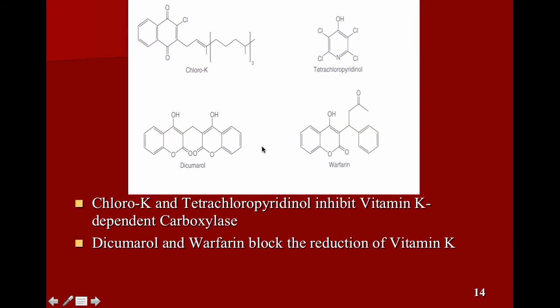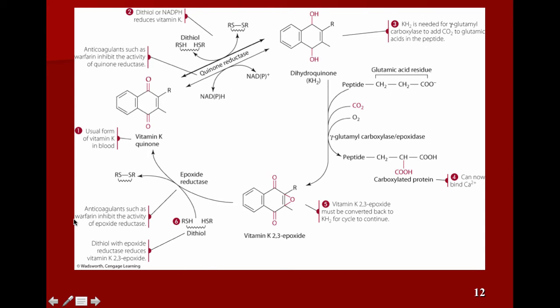Warfarin, and also this molecule, dicumarol, they actually block the reduction of vitamin K. So in other words, they block the activation of vitamin K, and if vitamin K is not active, it can't participate in, it can't assist vitamin K-dependent gamma carboxylase. So if it's not activated, blood clotting becomes compromised. So that's how these anticoagulants work. And this diagram actually says, anticoagulants such as warfarin inhibit the activity of epoxide reductase. So in other words, it inhibits the reduction of vitamin K. It also does it here. So anticoagulants such as warfarin inhibit the activity of quinone reductase. So warfarin inhibits the two enzymes that reduce and activate vitamin K. Therefore, less vitamin K is activated, less proteins are carboxylated, and blood clotting can be inhibited.